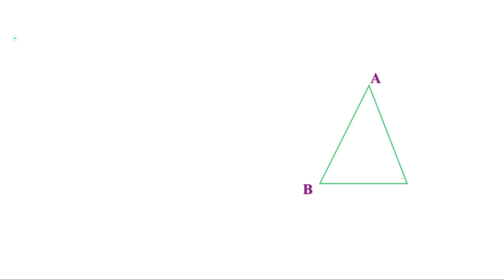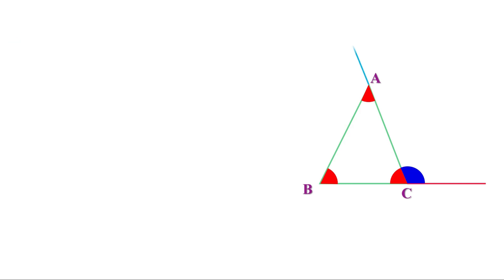Let us start with the simplest polygon — a triangle. We know there are three inner angles for a triangle. When we extend the sides, we get outer angles.